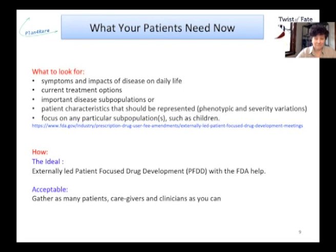With the FDA's help, an acceptable option is to gather as many patients, caregivers, and clinicians as you can and follow the guidelines. Take into consideration that teenagers have a tendency to lower the intensity or importance of their symptoms. The patient-reported outcomes — what we call the core measures — have to be carefully evaluated.